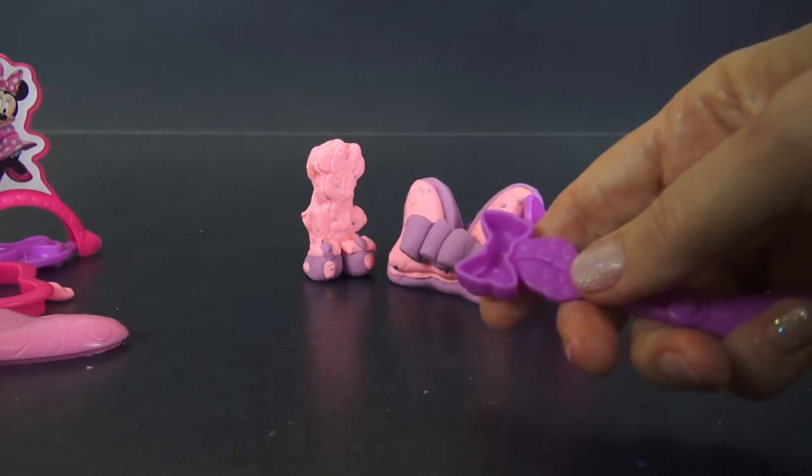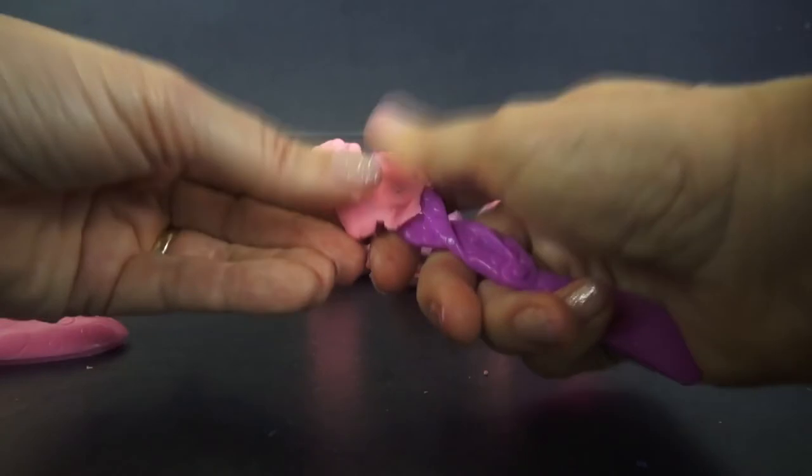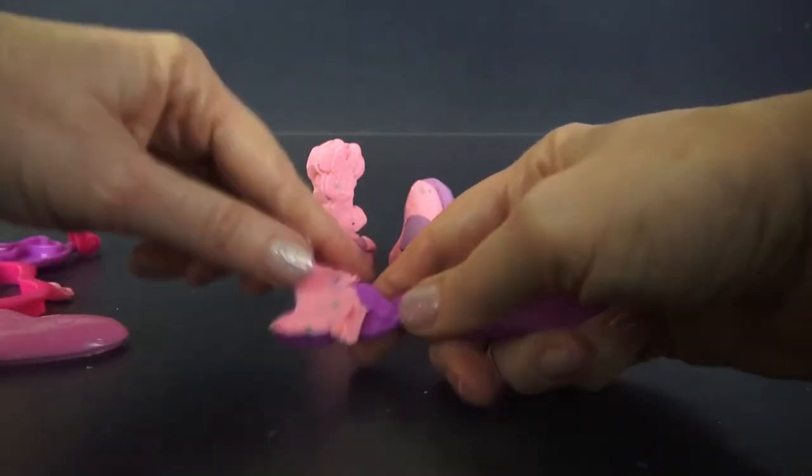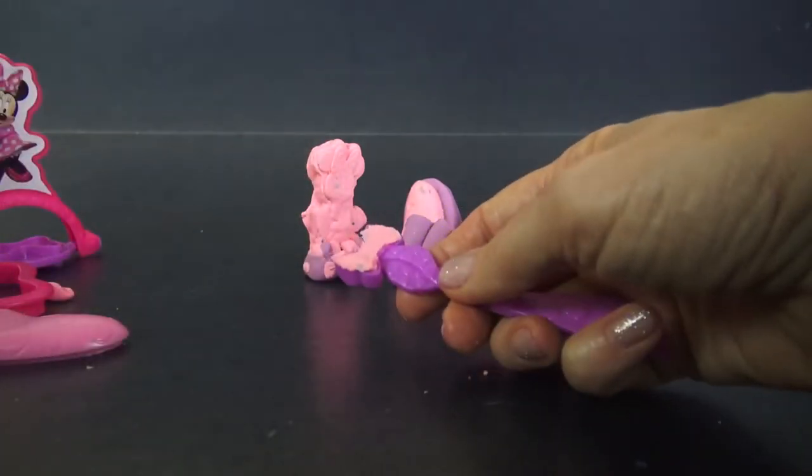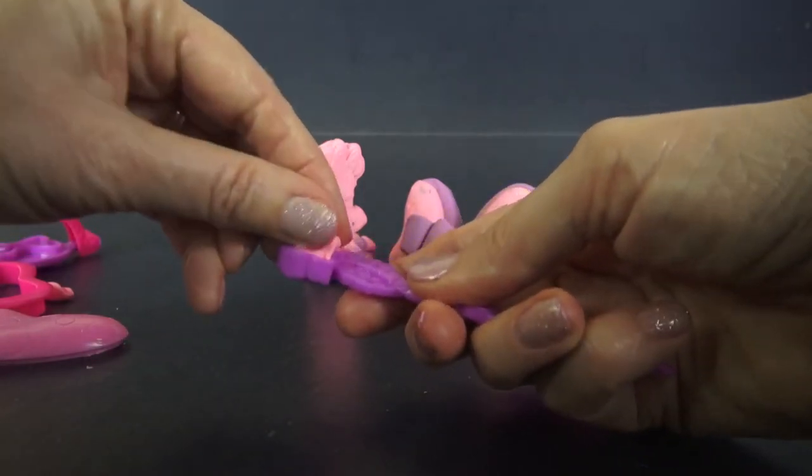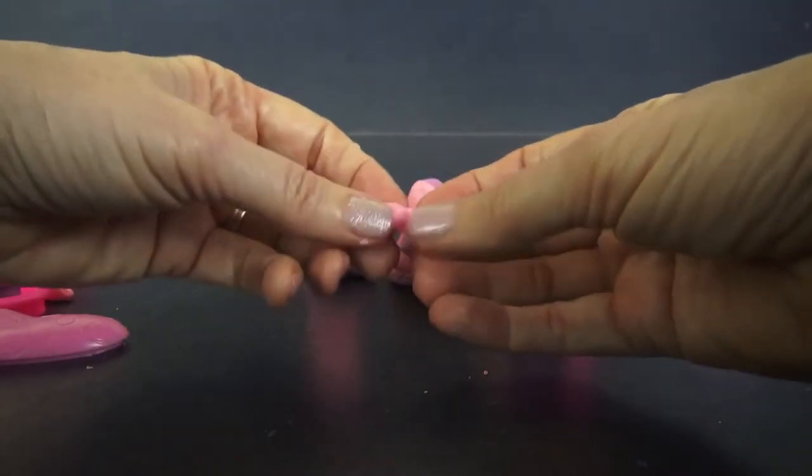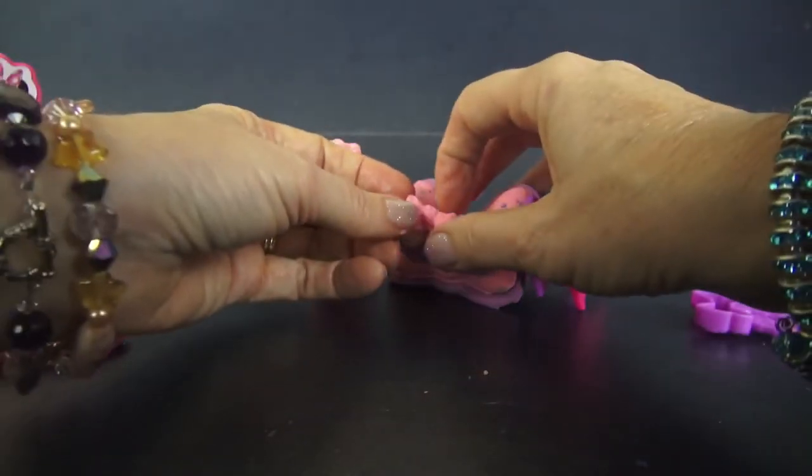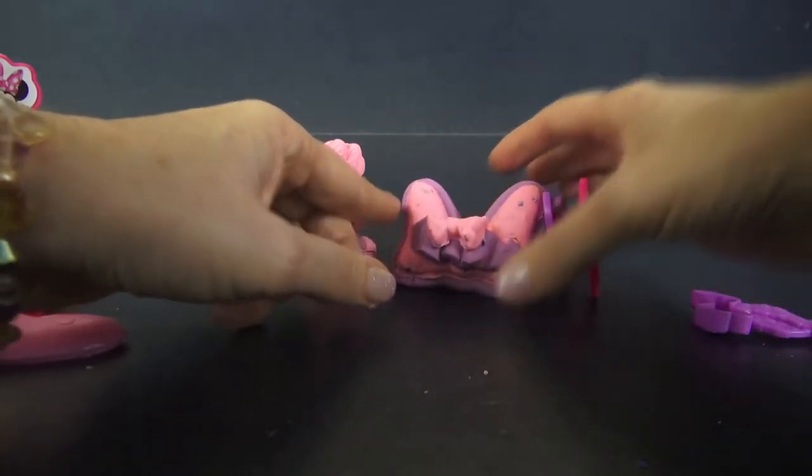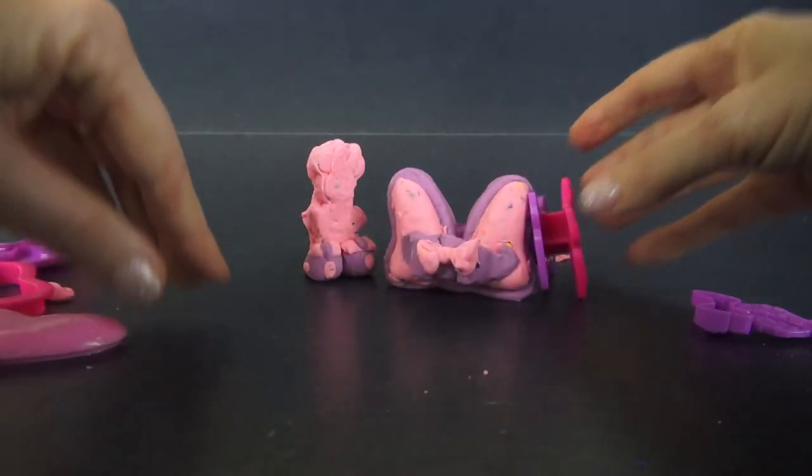Just need a little bit of Play-Doh and we'll use our pink. I think that'll work very nicely. Yeah, perfect. There we go. I'll put that right there. Look at that layered bow. Isn't that pretty with the colors and the shapes that we have? I think that turned out really well.